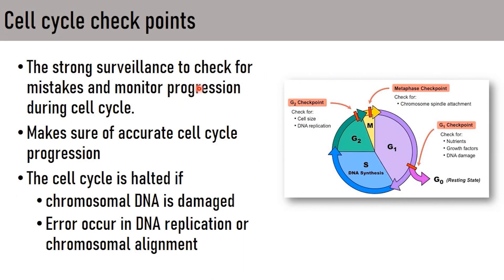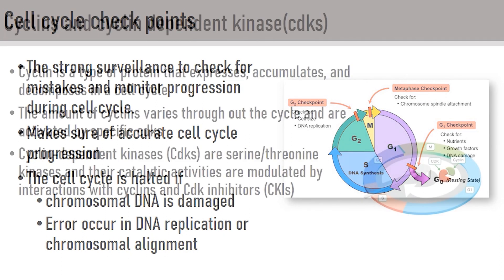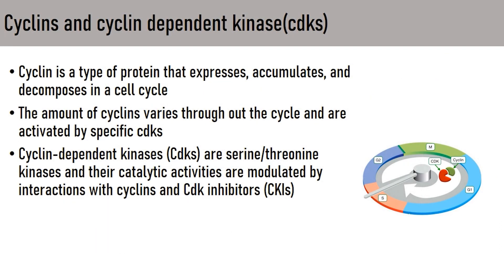The cell cycle checkpoints monitor cell cycle progression and make sure that the cell cycle happens in an orderly as well as error-free manner. In case there is any error, the cell cycle is halted. For example, if there is chromosomal DNA damage, error in DNA replication, or chromosomal alignment error, there will be a hold in cell cycle progression at checkpoints such as the G1 checkpoint, G2 checkpoint, and the metaphase checkpoint.